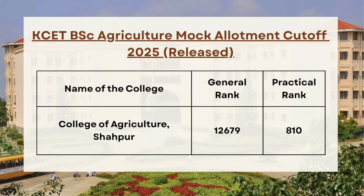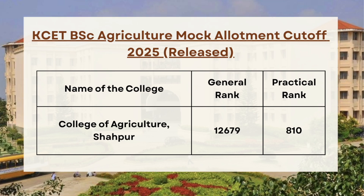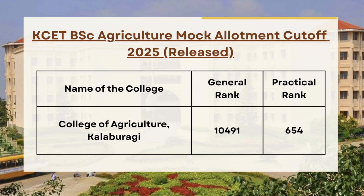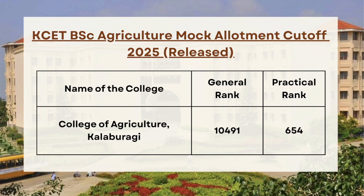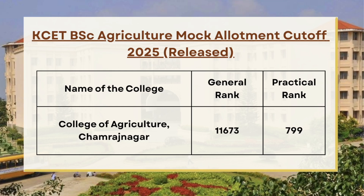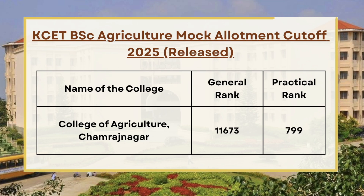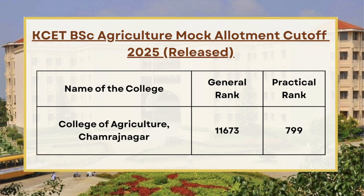For College of Agriculture Sapu, the general category cutoff is 12679 and for practical the cutoff is 810. Next, as you can see on the screen, for College of Agriculture Kalbo the general category cutoff is 10491 and for practical the cutoff is 654. Next we have College of Agriculture Chandnagar, so for general category the cutoff is 11673 and for practical category the cutoff is 799.